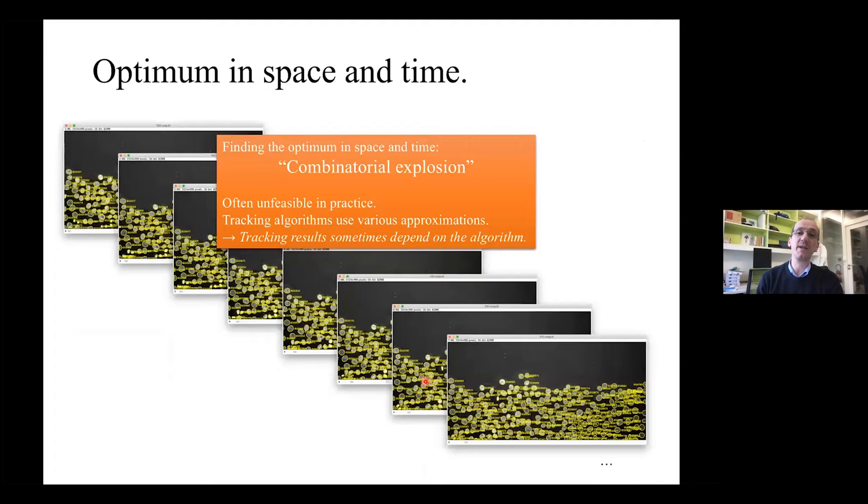There's so many possibilities, so many hypotheses to test that in practice, computationally, the problem is unfeasible, intractable, as soon as you have hundreds of thousands of cells across hundreds of time points, which is what matters in biology nowadays. Most tracking algorithms use various approximations that differ from one algorithm to another. Ideally, this approximation would have zero impact on the result, but they do have impact. This is why sometimes tracking results depend on the algorithm you pick. So it's important to know what algorithm you use and to pick the one that fits your biology.